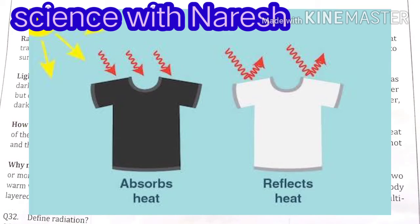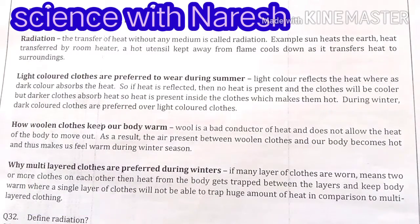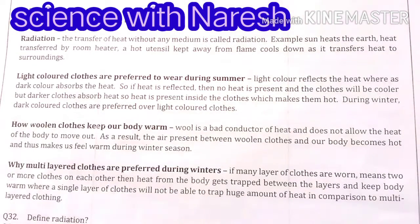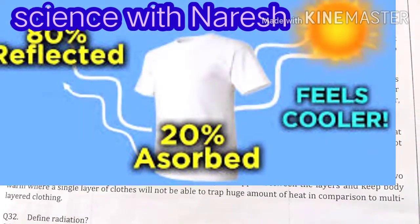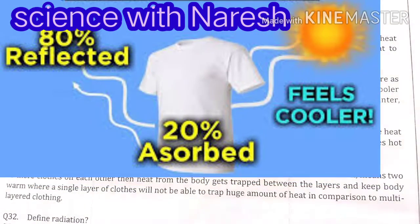If heat is reflected, no heat is retained and the clothes remain cooler. Dark colored clothes absorb heat so heat is present inside the clothes, making them warm. So during winter dark colored clothes are preferred, and during summer light colored clothes are preferred.